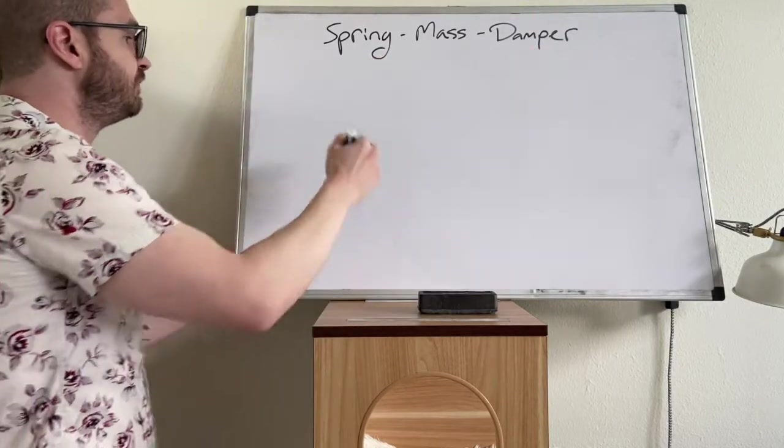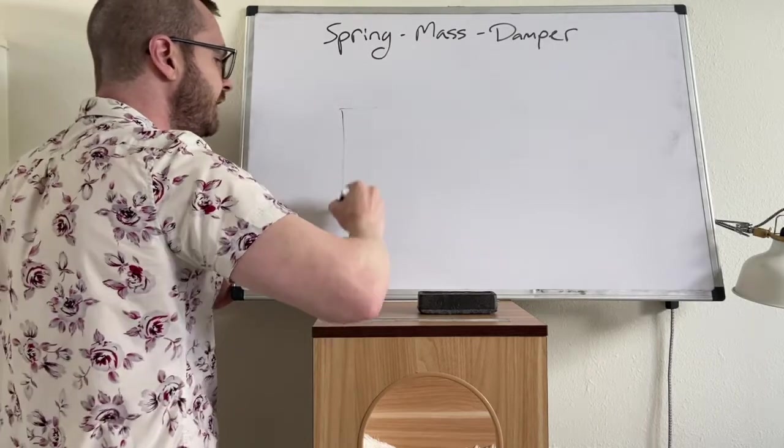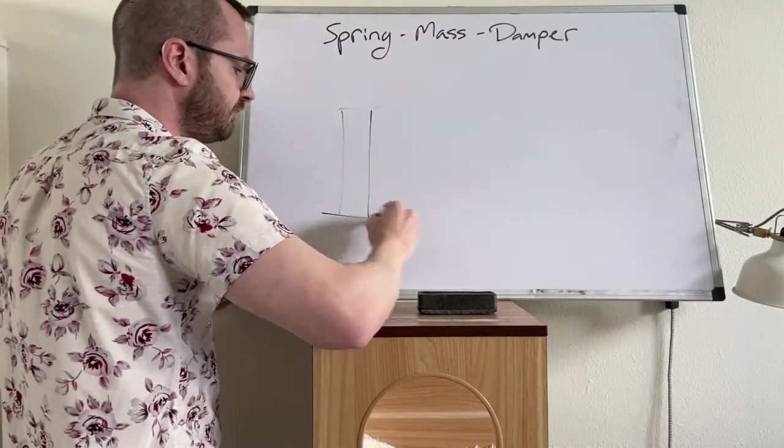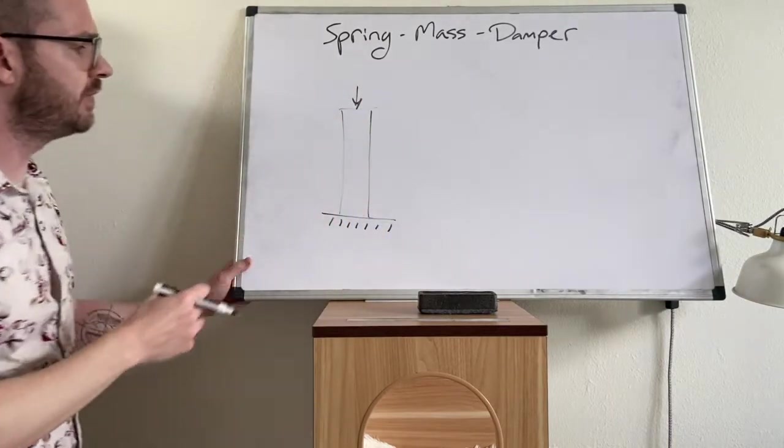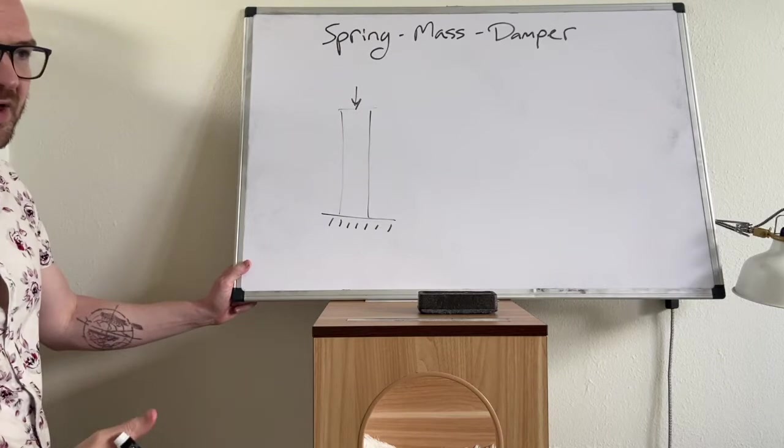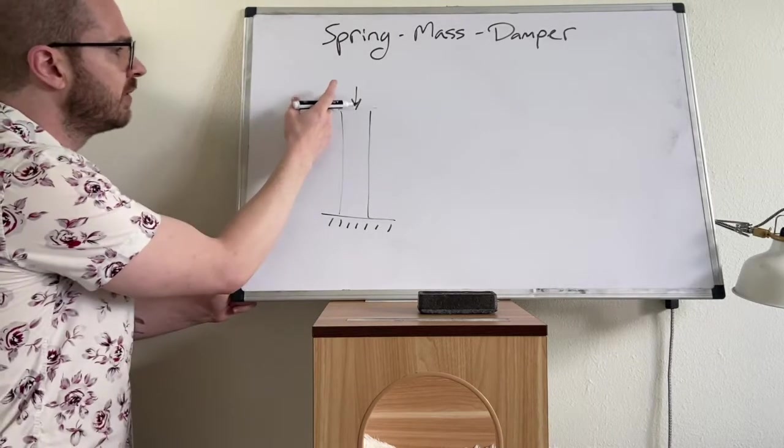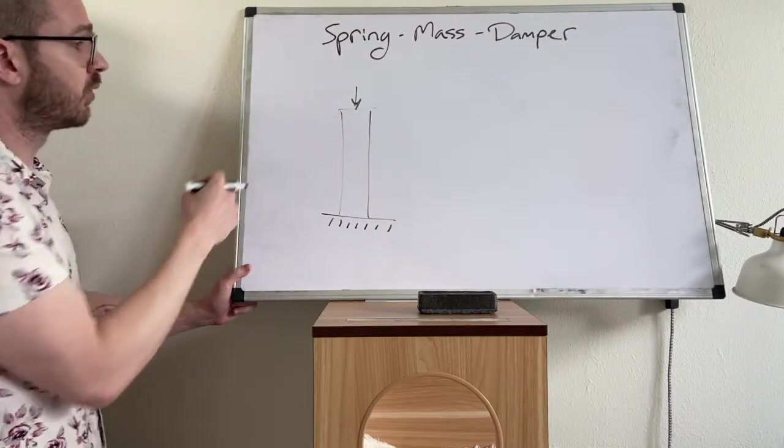So some examples. Suppose we are modeling a support column and this column could be made of concrete, it could be made of steel, and we're going to apply some loading to this support column.